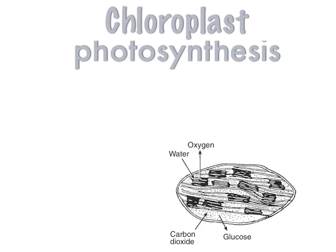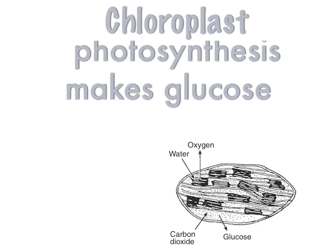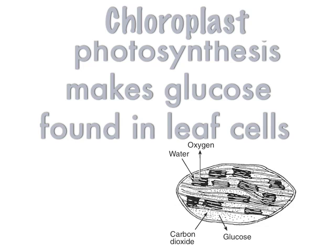The chloroplast is found in plant cells and it's the location of photosynthesis. Basically, chloroplasts make food — they make glucose for the plant. You may also be asked where they're located: they're in leaf cells, because that's the part of the plant that absorbs sunlight.